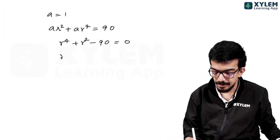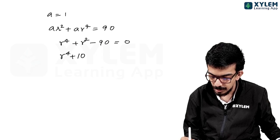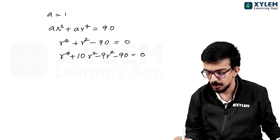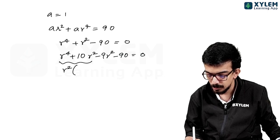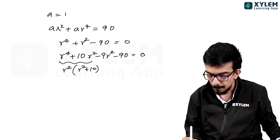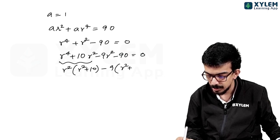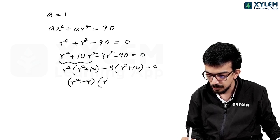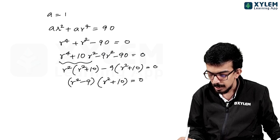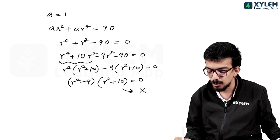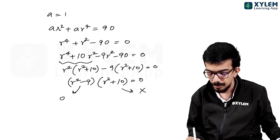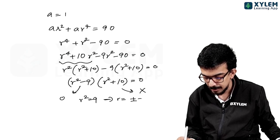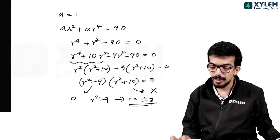Now factoring: r⁴ plus 10r² minus 9r² minus 90 is equal to 0. This gives r² minus 9 into r² plus 10 is equal to 0. Since r² plus 10 cannot be zero, the positive value of r is 3.